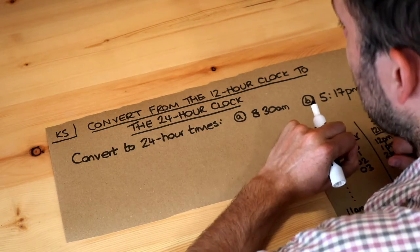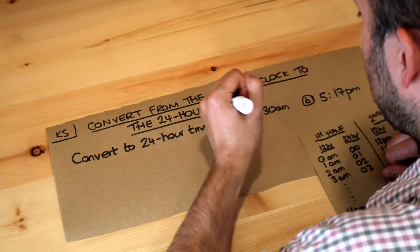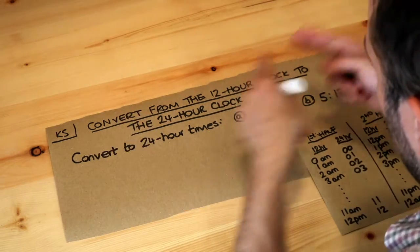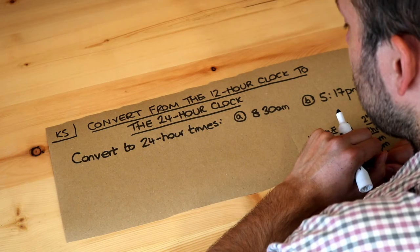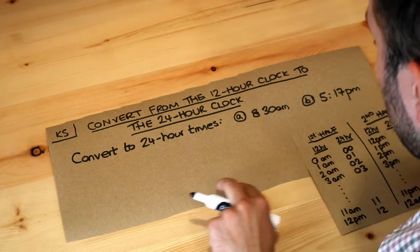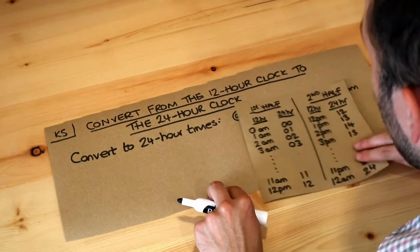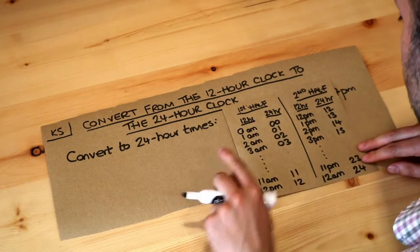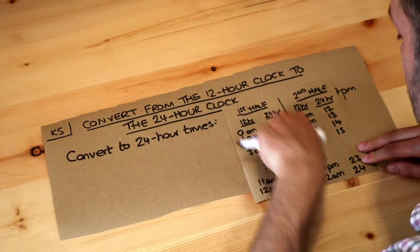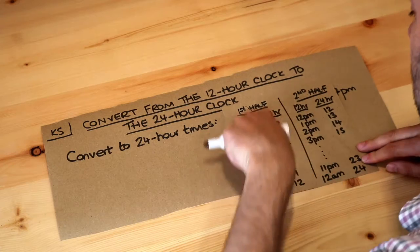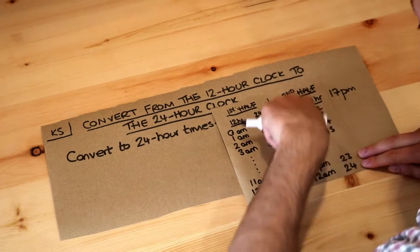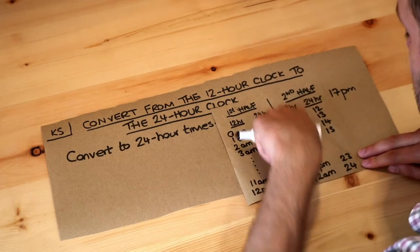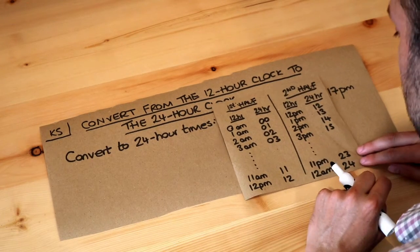When we give times of the day, sometimes we use a 12-hour clock which spans a 12-hour period, or we can give it on a 24-hour clock. To keep this video brief, I've come up with this nice little chart here. The first half of the day, like the morning up to noon, is going to be this left half of the table, and the second half of the day, the afternoon and evening, is going to be in this right side of the table.